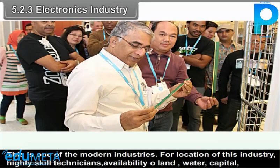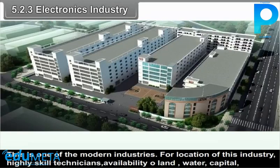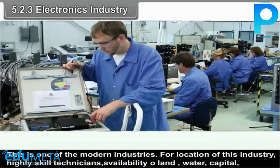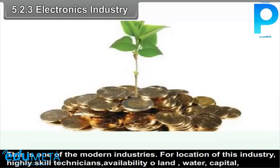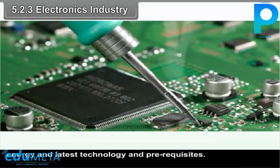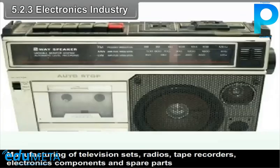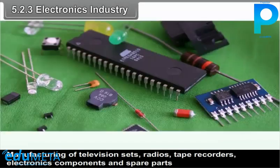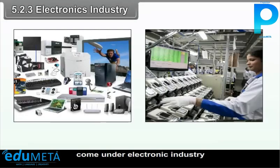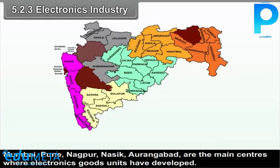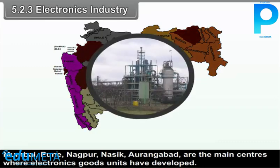Electronics industry is one of the modern industries. For location of this industry, highly skilled technicians, availability of land, water, capital, energy and latest technology are the prerequisites. Manufacturing of television sets, radios, tape recorders, electronic components and spare parts come under electronic industry. Mumbai, Pune-Chinchwad, Nagpur, Nasik and Aurangabad are the main centres where electronics goods units have developed.